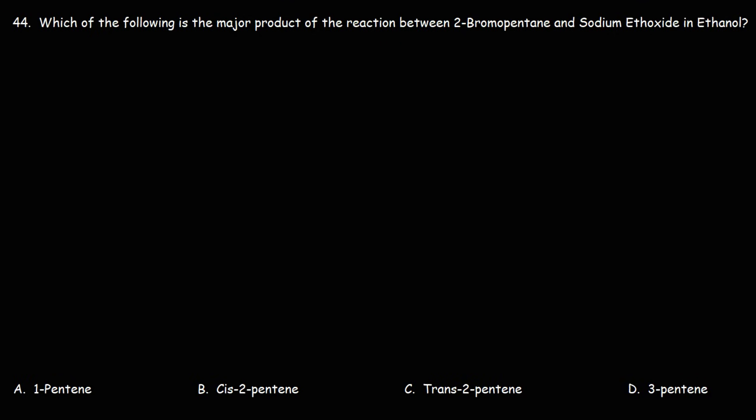Number 44. Which of the following is the major product of the reaction between 2-bromopentane and sodium ethoxide in ethanol?